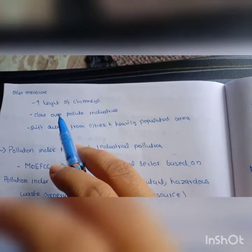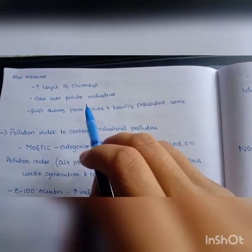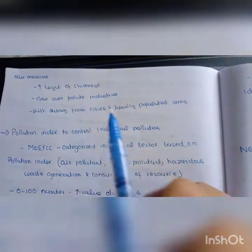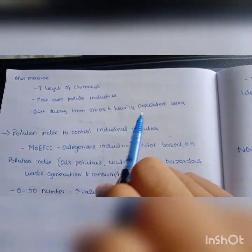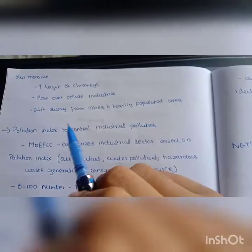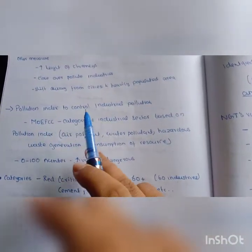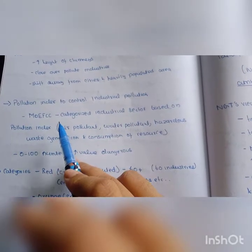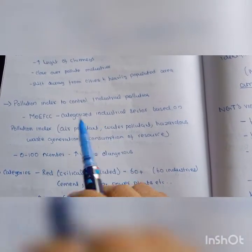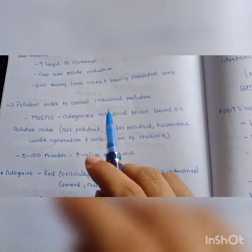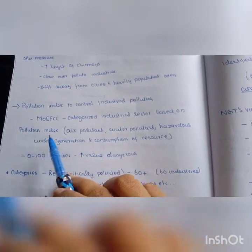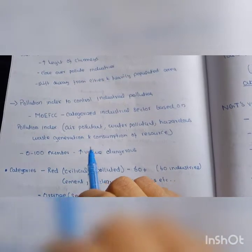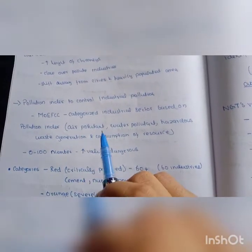Other measures: chimney height increase, polluting industries closed, industries constructed away from heavily populated areas. Pollution index to control industrial pollution. Ministry of Environment, Forest, and Climate Change categorizes industries based on pollution level. This is the pollution index based on air pollution, water pollution, hazardous waste generated, and consumption of resources.